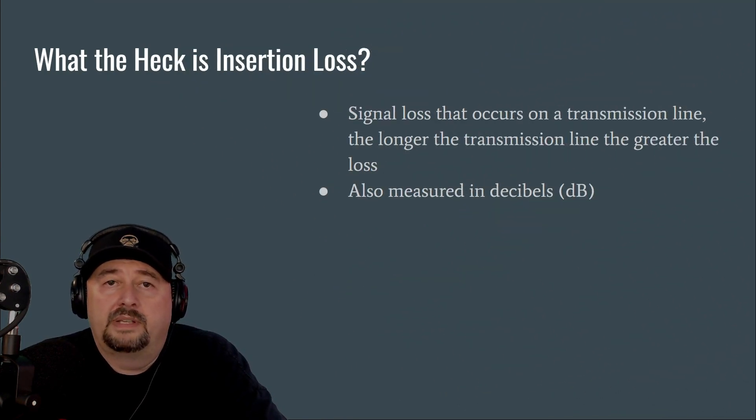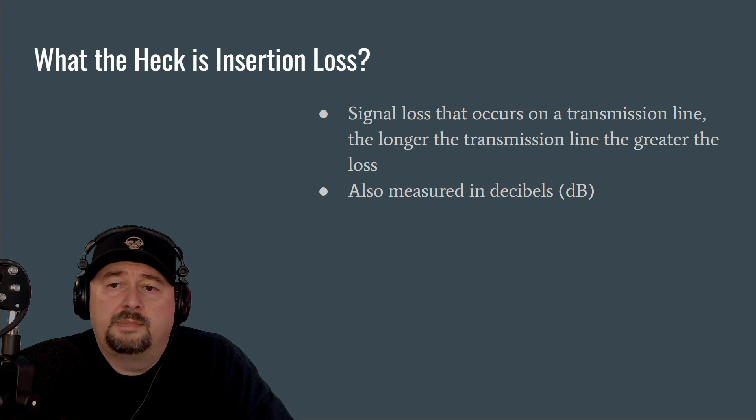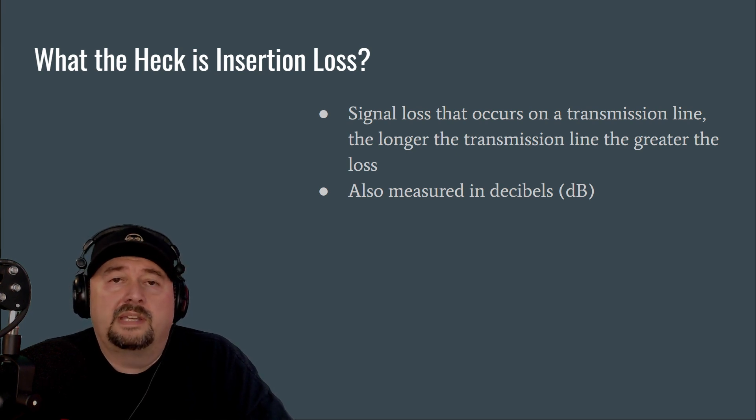So to confuse the matter even more, we're going to talk a little bit about insertion loss. So this is a signal loss that occurs on a transmission line. The longer the transmission line, the greater the loss. It's also measured in decibels. Now some people will call this line loss or coax loss. But let's take a look at it.